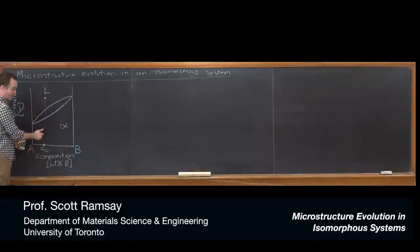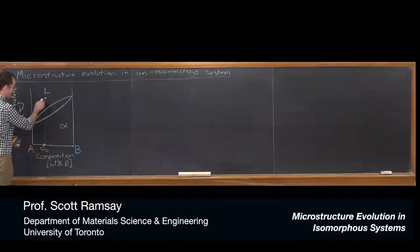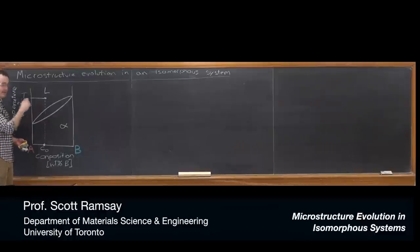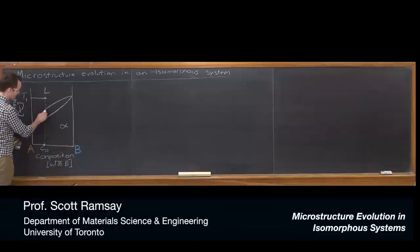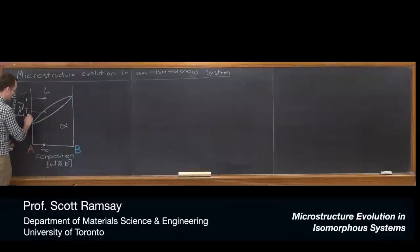High temperature it's all liquid, low temperature it's all solid. We're going to call it the alpha phase for the solid phase. So what I want to explore is what the microstructure looks like at a few different temperatures. T1 well up into the liquid region above the liquidus. And then another temperature just below the liquidus. And that's going to be T2.